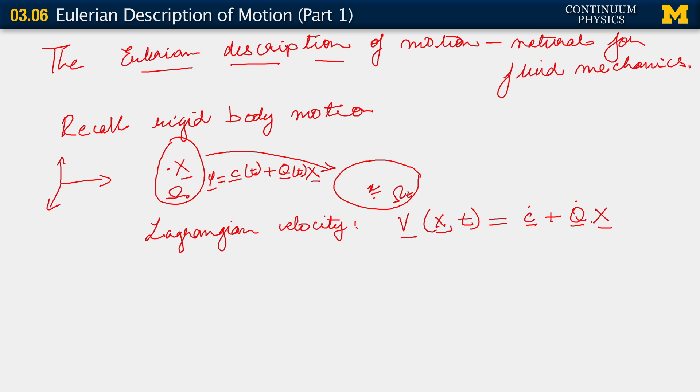Now we want to rewrite this as little v of x comma t. This is not at all difficult once we realize that phi of X comma time is actually little x itself, which for this rigid motion is c plus QX. We're going to use this relation to invert the description. We're going to invert the description of motion to write X equals little x minus c Q inverse. I've just inverted the relation on the previous line, the equation on the previous line.